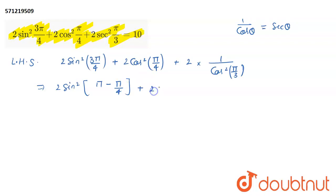And the rest, you copy as it is: 2cos²(π/4), plus 2 divided by cos²(π/3).